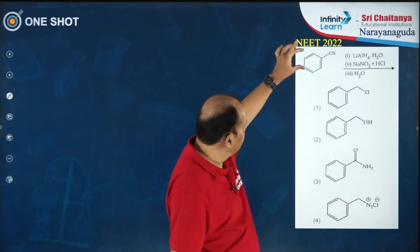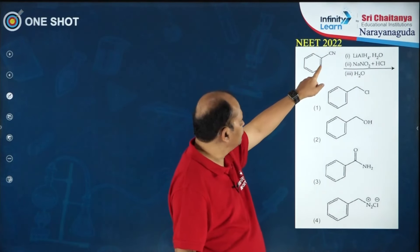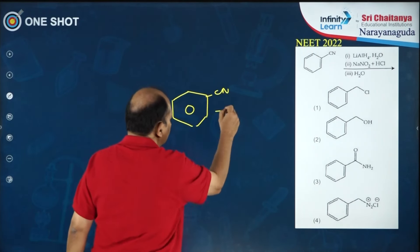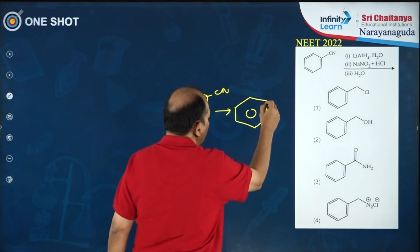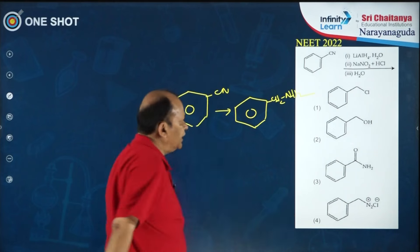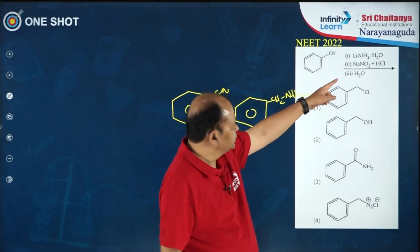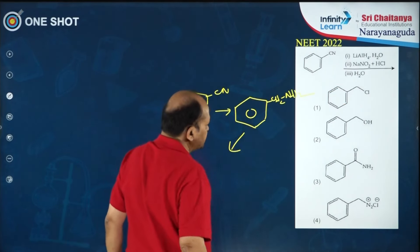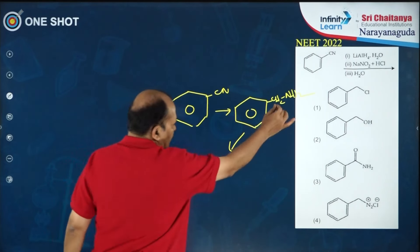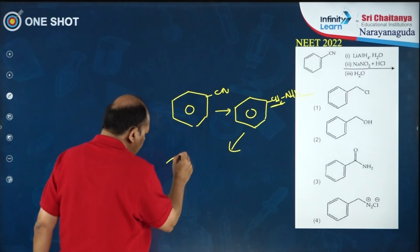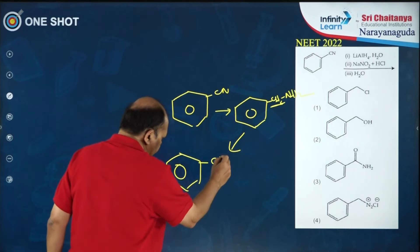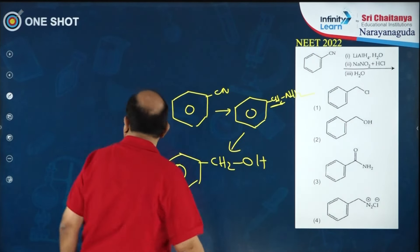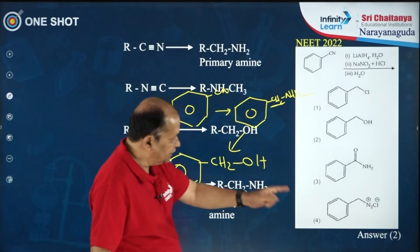Another question: cyanobenzene treated with LiAlH4 — what are you getting? You will get benzylamine as a primary amine. That compound is then treated with sodium nitrite in HCl — it undergoes diazotization to form a diazonium salt. Since it is an alkyl diazonium salt (attached to benzylic carbon, not the aromatic ring), it will get hydrolyzed to give benzyl alcohol. The answer is option 2.